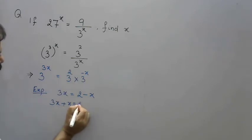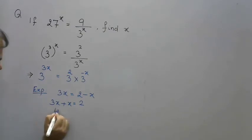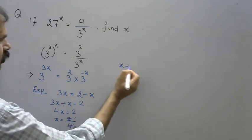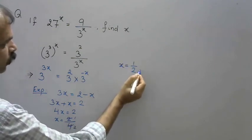So 4x is equal to 2, which means x equals 2/4, which simplifies to 1/2. Therefore x equals 1/2.